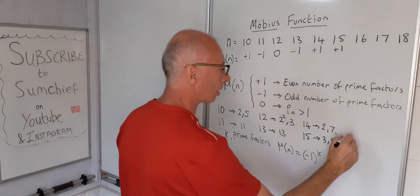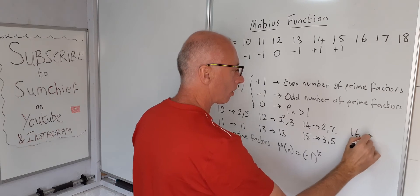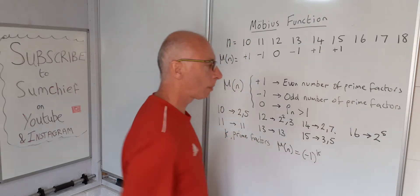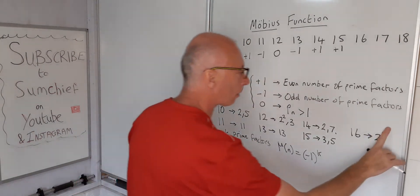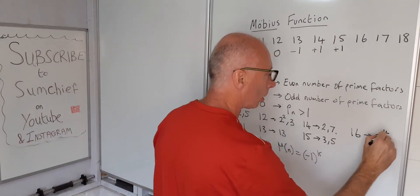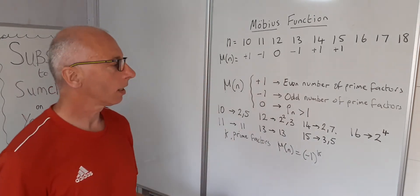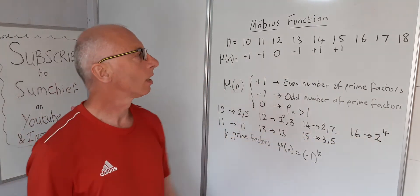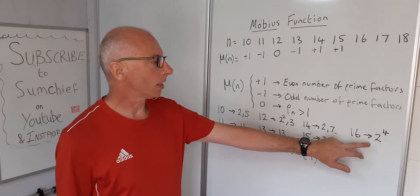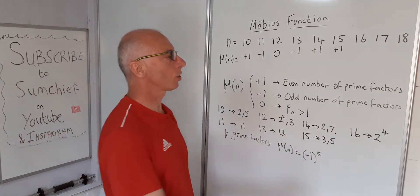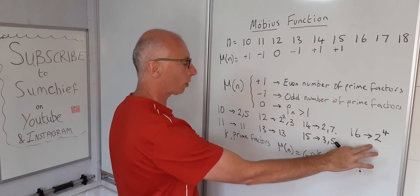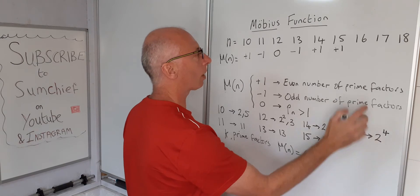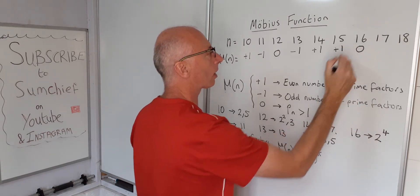16 in prime factors is just 2 to the power of 4. Since there is more than one of this prime factor — 2 appears four times — 16 is not going to be plus 1 or minus 1. It's going to be 0, because there's more than one of these prime factors.